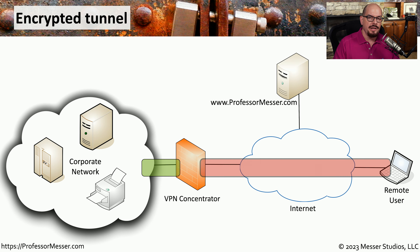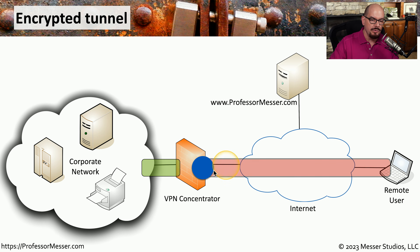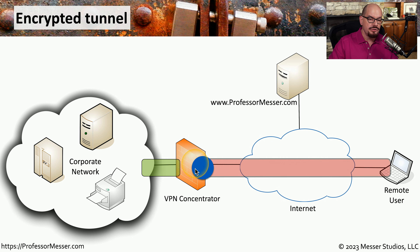Here's a common description of an encrypted connection using a virtual private network. In this example, we're using a remote user that is outside of the corporate network. There is a VPN concentrator that provides the conversion between the outside and the inside network, and we have resources available on our corporate network. The red section of this diagram is the encrypted tunnel itself — all of the traffic sent from the remote user to the VPN concentrator is encrypted. If someone captured this traffic traversing the internet, they would have no idea what was contained within those packets.